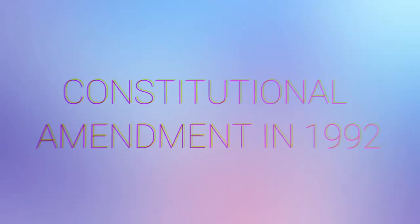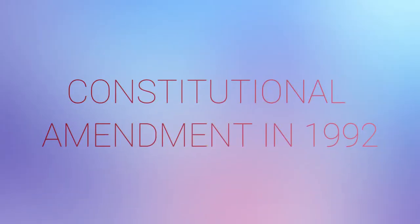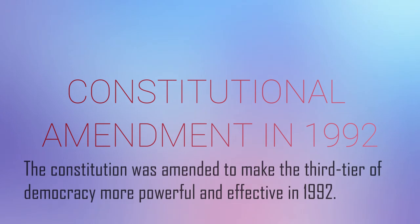A major step towards decentralization was taken in 1992. The process of decentralization in India focuses on the 73rd amendment, which deals with district, sub-district and village level institutions in rural areas. The most important change in decentralization was taken in 1992.